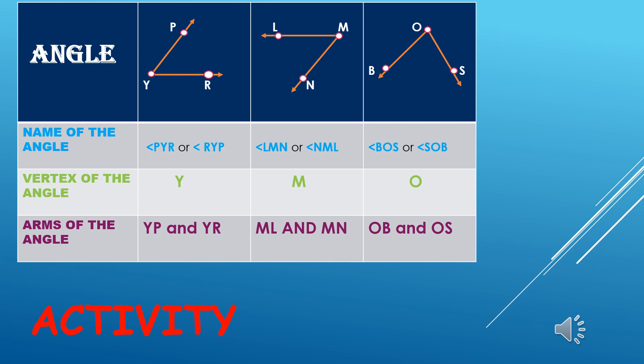The vertex is a point where both arms of the angle join. Now next, the arms of the angle. We can see that arms are nothing but two different rays.